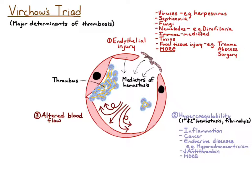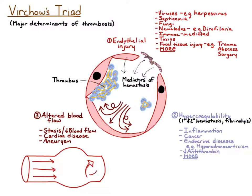Moving on to altered blood flow, there are several different causes. Stasis is when blood flow is decreased or slowed; in this case there is more contact of platelets with the endothelium, and platelets are more likely to be activated. Heart disease results in abnormal chambers within the heart, which can lead to stasis, congestion, and decreased blood flow. Aneurysms are dilations within the blood vessel — essentially a balloon-like dilation — where blood flow is normal before reaching the aneurysm but becomes turbulent after it.